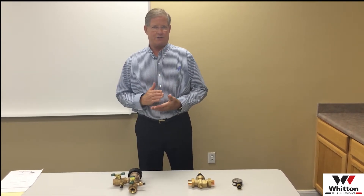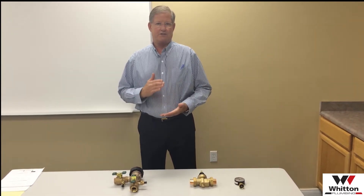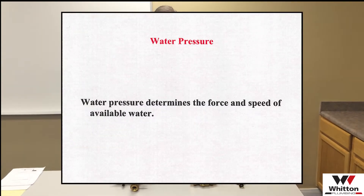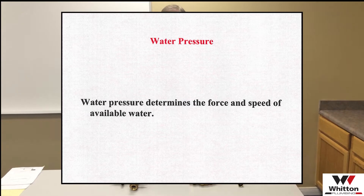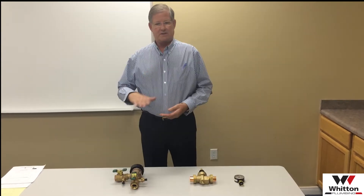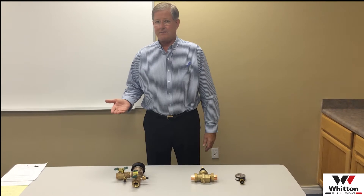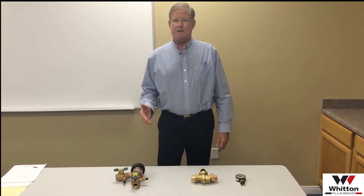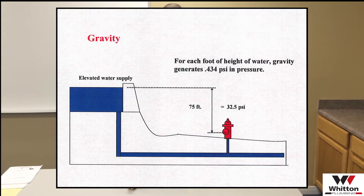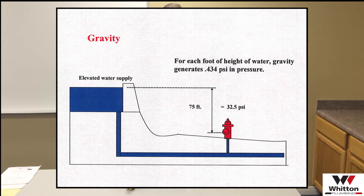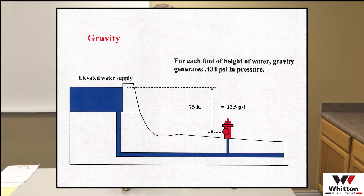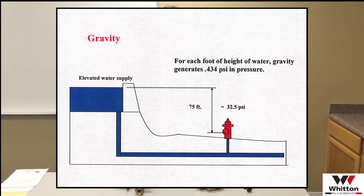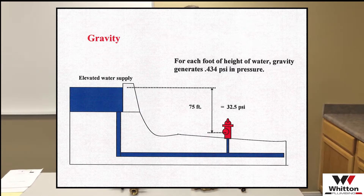The pressure of water is determined by friction loss and how that water travels through piping. For example, if you lift a gallon of water one foot off the ground, it develops about 4.34 PSI of pressure. So if you have that one-gallon jug of water 75 feet in the air with a little tube at the bottom, down on the ground 75 feet away you're going to have about 34 pounds of pressure coming out of that tube.